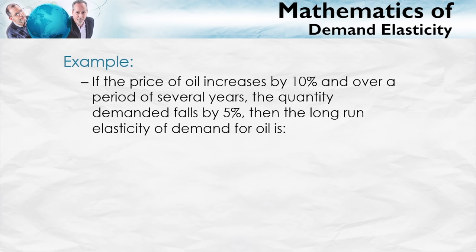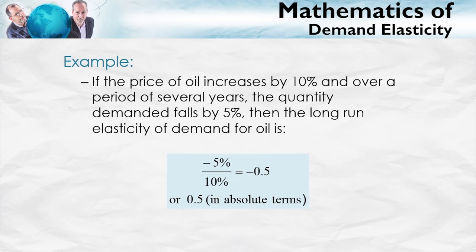Let's give an example. If the price of oil increases by 10%, and over a period of several years the quantity demanded falls by 5%, then the long-run elasticity of demand for oil is: elasticity equals the percentage change in quantity demanded, that's minus 5%, divided by the percentage change in price, that's 10%. So the elasticity of demand is minus 5% divided by 10%, or negative 0.5. Elasticities of demand are always negative because when price goes up, quantity demanded goes down, so we often drop the negative sign and write the elasticity as 0.5.